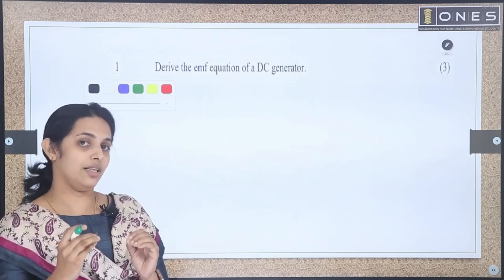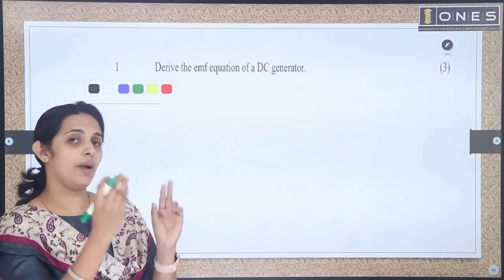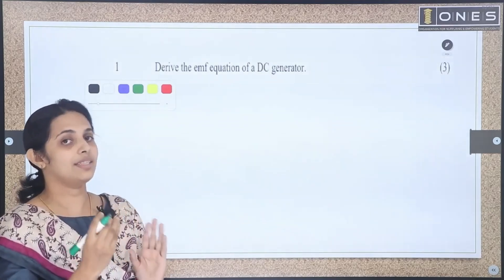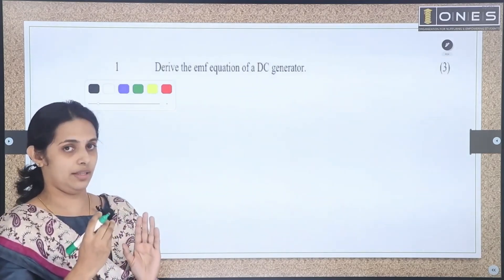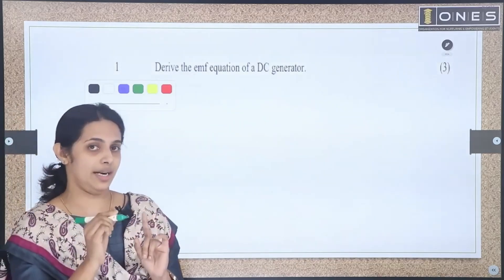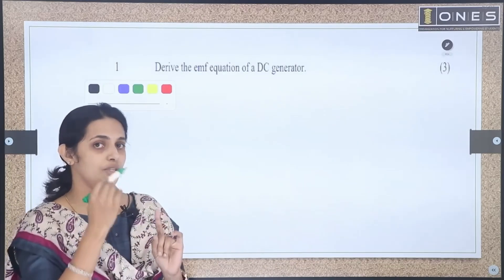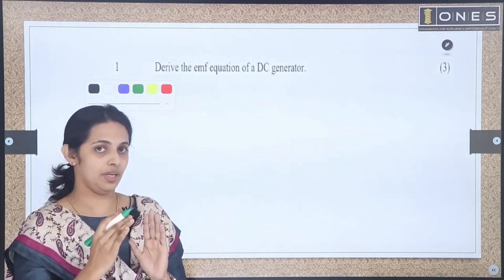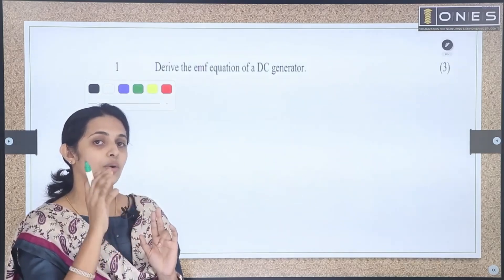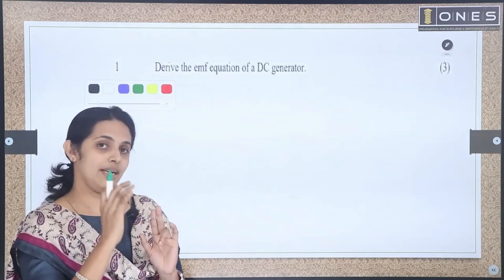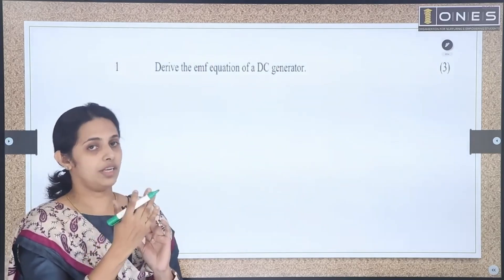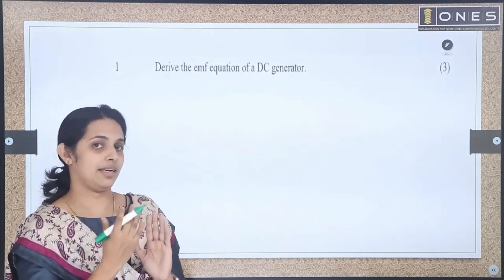We write the EMF equation. In any parallel path, we calculate the EMF generated. We multiply the voltage in a coil and multiply across the entire parallel path to get the EMF equation.